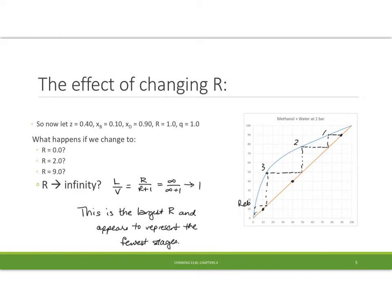But notice now if I go to r equal infinity, l over v approaches the value of 1. I can't let r go any larger than that, so therefore this is going to be a limiting value definitely. And this value here seems to give me the fewest possible stages.